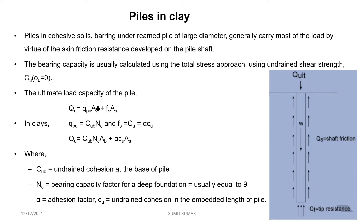The ultimate load capacity of the pile is QU = QPU × AB + FS × AS. Here QPU is the tip resistance, also called point resistance, and FS is the skin friction. So the pile load capacity is basically due to two components: the first is the point resistance and the second is the skin friction.